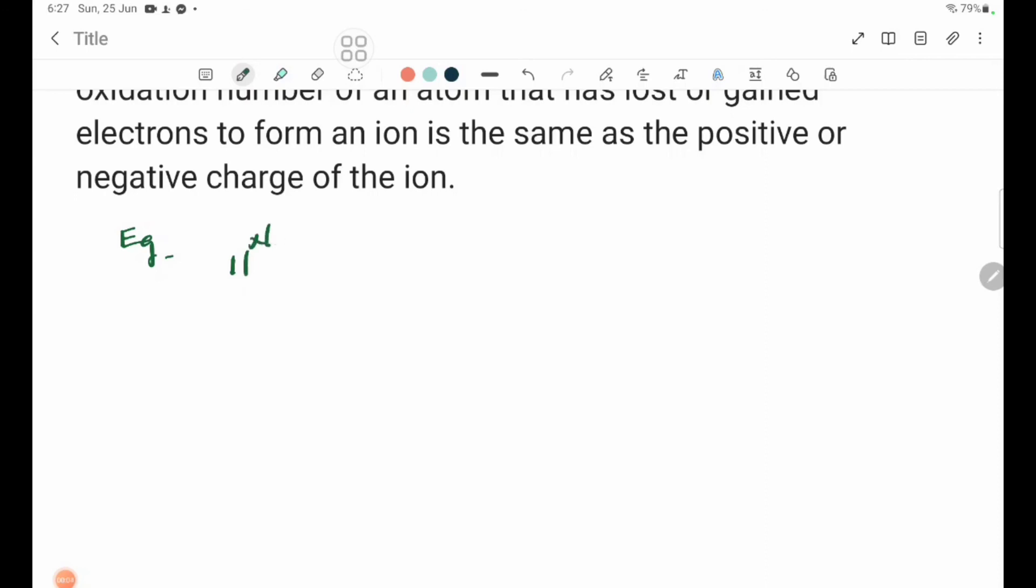Example: Na has 11 electrons. When sodium loses one electron to form Na+, the oxidation number is plus 1 because the charge is positive. Chlorine has 17 electrons. When Cl gains one electron to form Cl-, the oxidation number is minus 1.